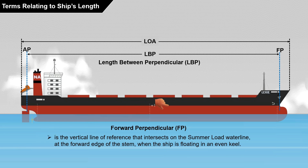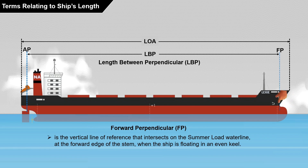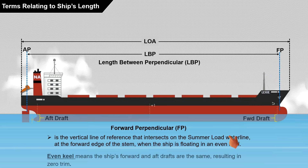If this is the ship's summer load waterline — the line that separates the black and red sections of the hull — the point at the forward edge of the stem where it intersects with the summer load waterline serves as the reference point for the forward perpendicular. Even keel means the ship's forward and aft drafts are the same, resulting in zero trim.